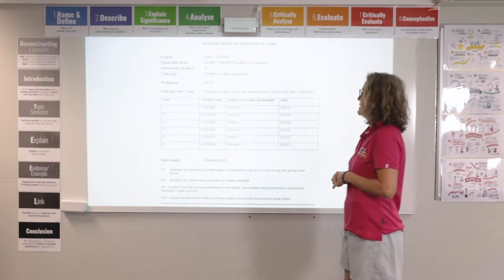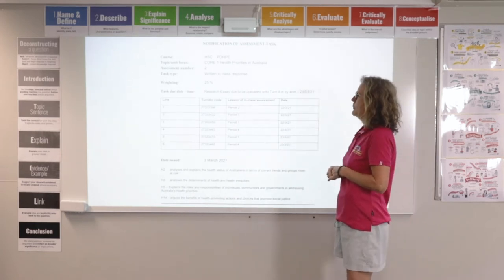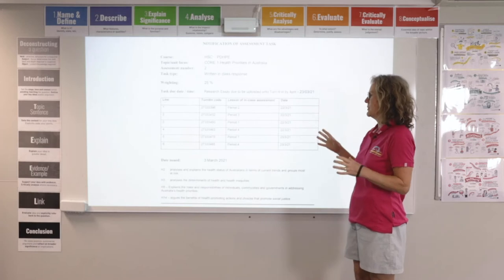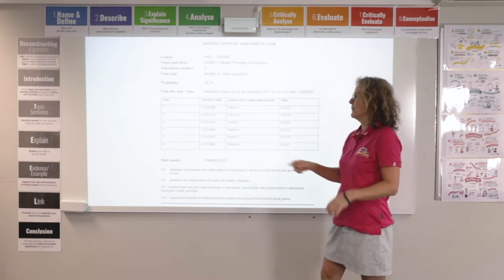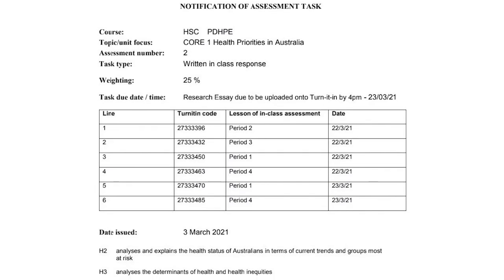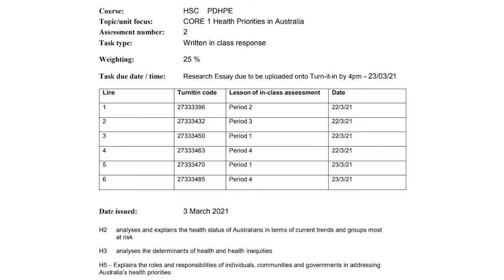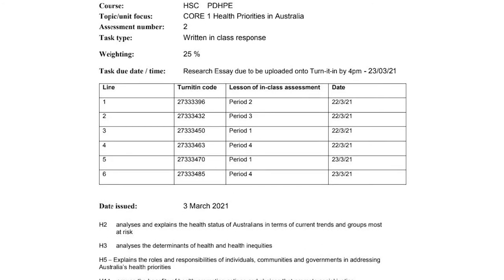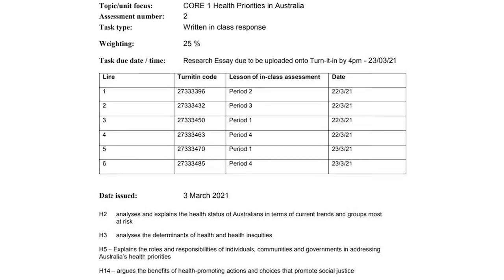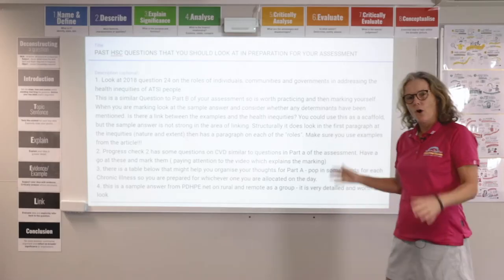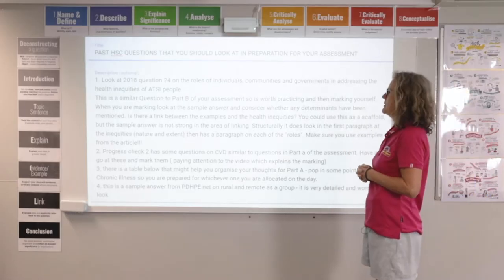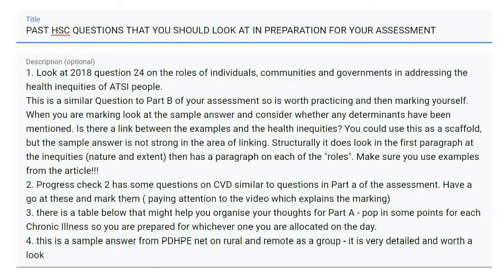So this is the assessment. The important things on your assessment notification are to remember what line you are in, find out what your Turnitin code is, and check which period you're doing the in-class part of the assessment. On the masterclass I put up this blurb, which has four different points and four different links associated with it.